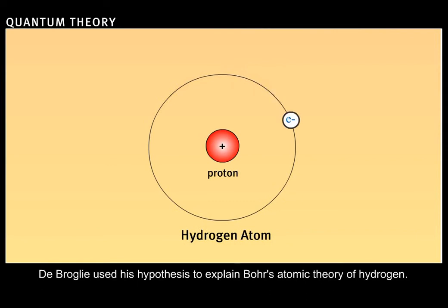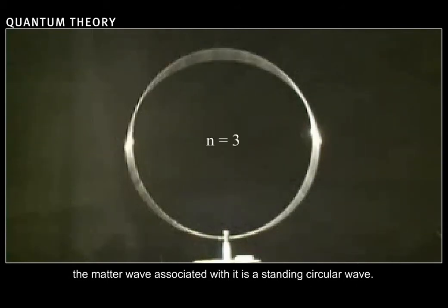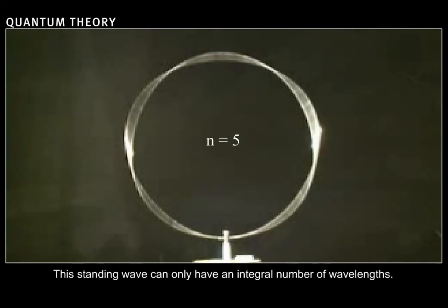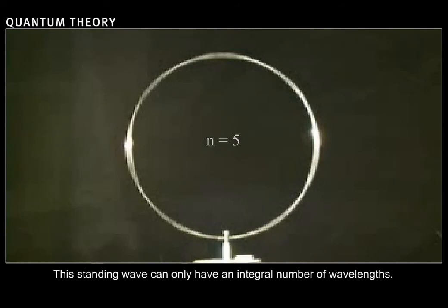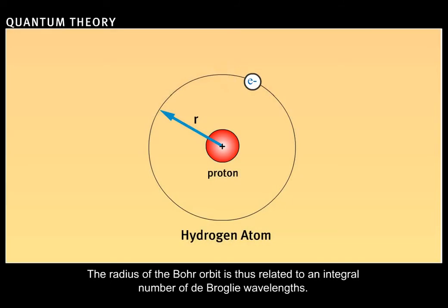De Broglie used his hypothesis to explain Bohr's atomic theory of hydrogen. Because the hydrogen electron travels in a discrete circular orbit in the Bohr model, the matter wave associated with it is a standing circular wave. This standing wave can only have an integral number of wavelengths. The radius of the Bohr orbit is thus related to an integral number of de Broglie wavelengths.